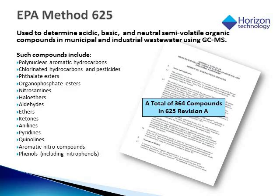EPA Method 625 is used to determine acidic, basic, and neutral semi-volatile organic compounds in municipal and industrial wastewater using GC-MS. It covers a broad range of compounds including polyaromatic hydrocarbons, phthalate esters, haloethers, ketones, quinolins, aromatic nitrile compounds, and phenyls. A total of 364 compounds are listed in this particular method.